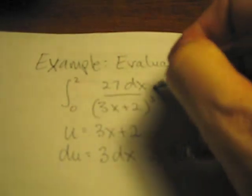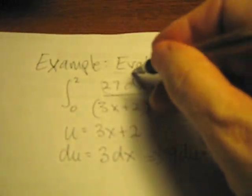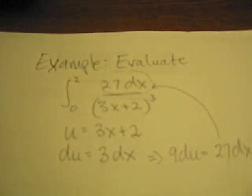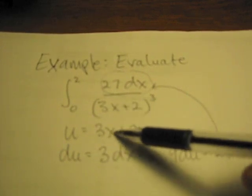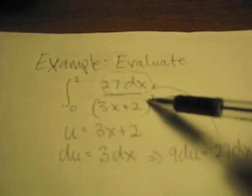So straight away, I have this part here of the derivative, and I would be using u as this function 3x plus 2 cubed. So it would be u cubed.